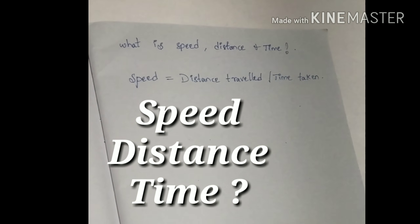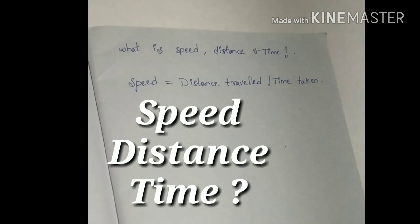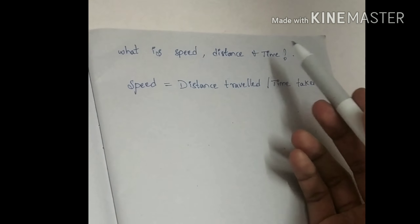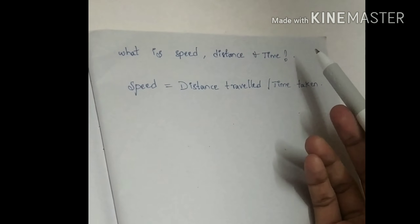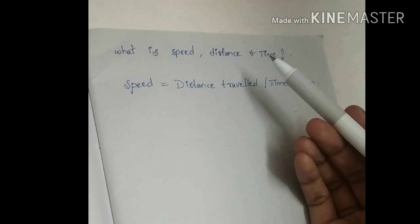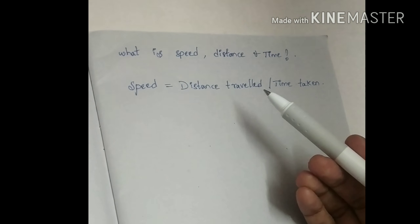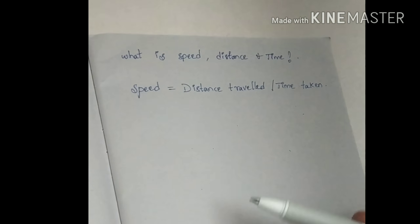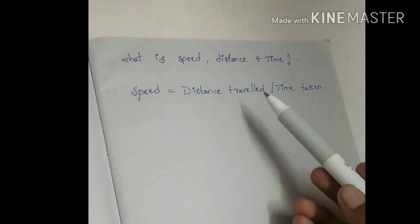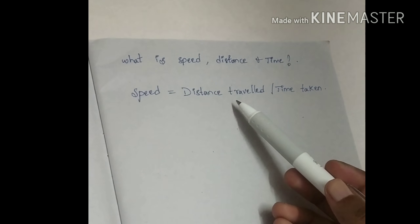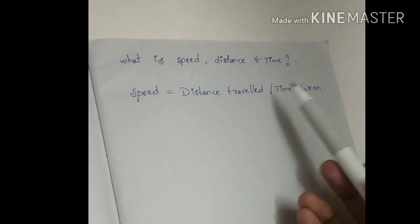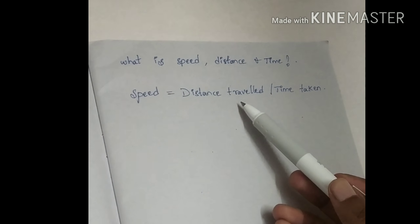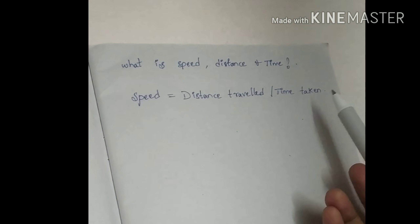Hi friends, today we will discuss speed, distance, and time. Speed is simply defined as distance covered per unit time, that is, speed is equal to distance traveled divided by time.